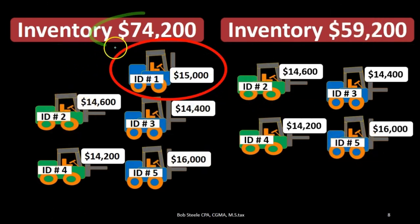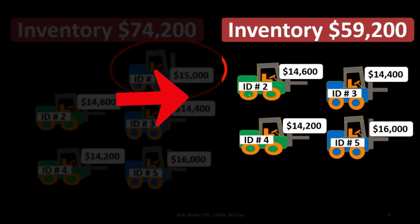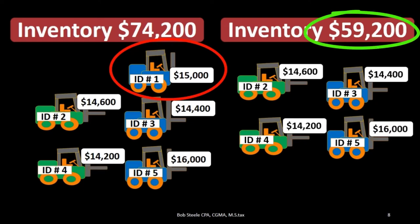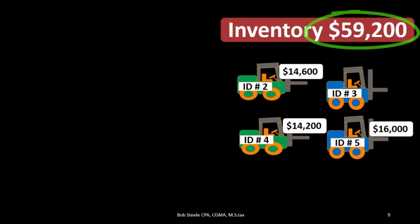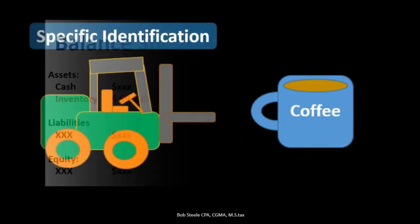That $74,200 is now going to be backed up by our subsidiary ledger — backed up by ID number, backed up by specific identification — adding up the $14,600, $14,400, $14,200, and $16,000, giving us $59,200 in inventory after that sale. That $59,200 is what will now be reported on the balance sheet.